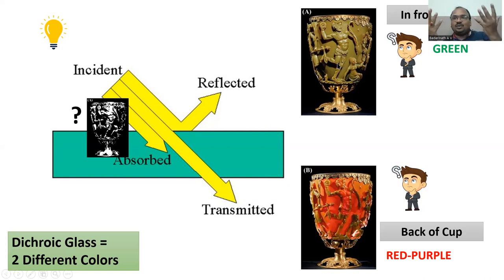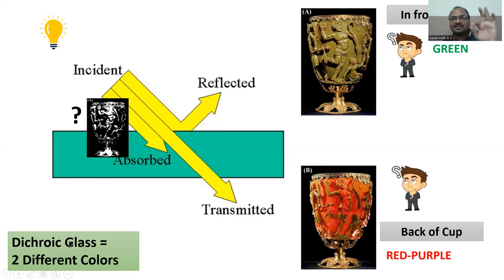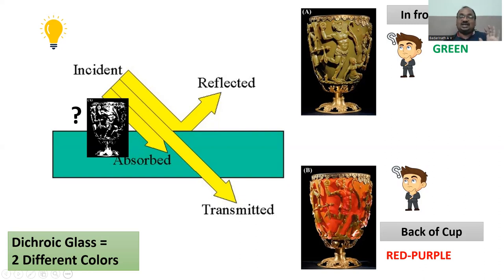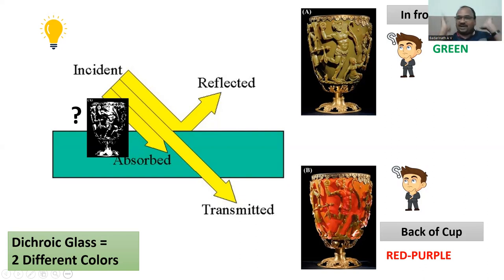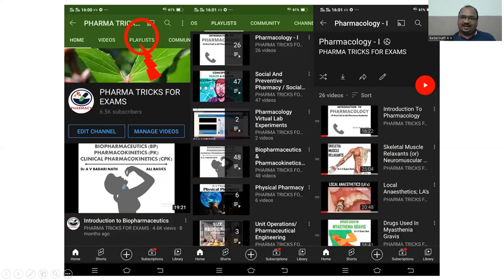It's a wonder, really. That's why this is called a dichroic glass. 'Di' means two, 'chrome' means color — two colors, dichroic glass. Two different colors — because this cup is made up of nanoparticles, nano glass particles. That's why it shows dichroic color.